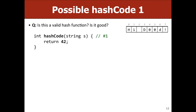A valid hash function must be consistent; a good one must also be well-distributed. Consider a hash function that always returns 42: is it valid? Yes, because the same string always gives the same number — you'll always look in the correct bucket. But is it good? No — everything ends up in one bucket, so you essentially have a linked list. This is a really hard way to implement a linked list.